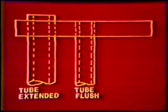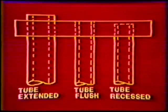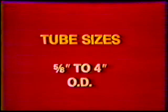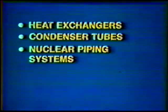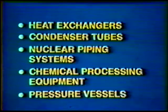Three types of joints are commonly welded with this type of head: tube extended outside the sheet, tube flush with the sheet, and tube recessed within the sheet. The type of joint depends on weld size, accessibility, and outside surface contour requirements. The tube-to-tube sheet welding head can be used on tubes with an approximate range of from 5/8 inch to 4 inch outside diameter. This process is commonly used to fabricate heat exchangers, condenser tubes, nuclear piping systems, chemical processing equipment, and pressure vessels.